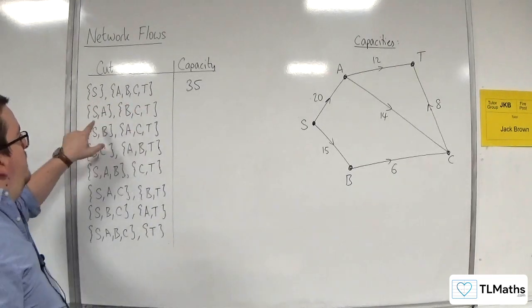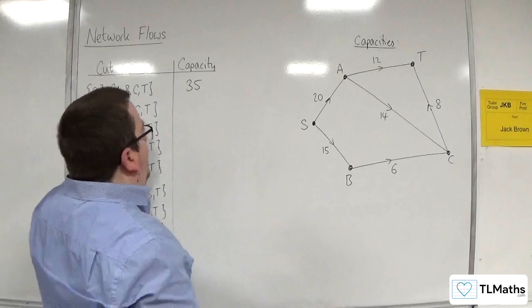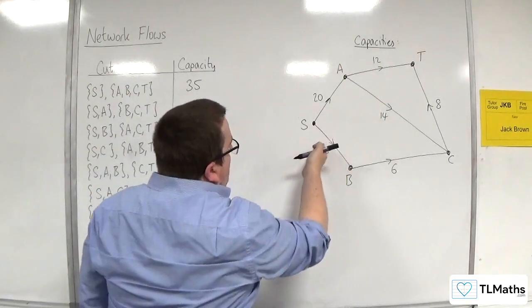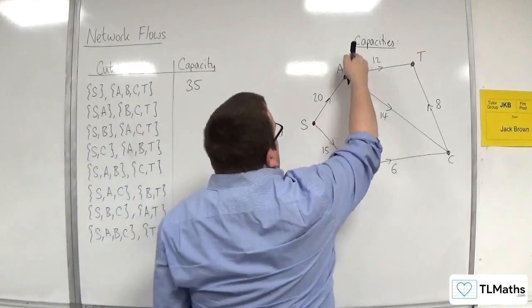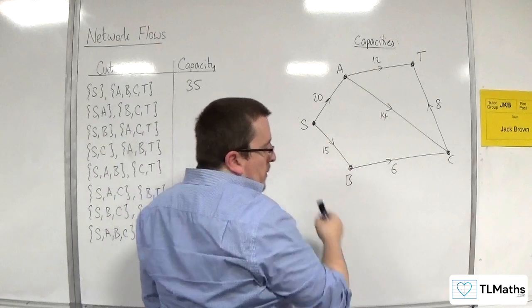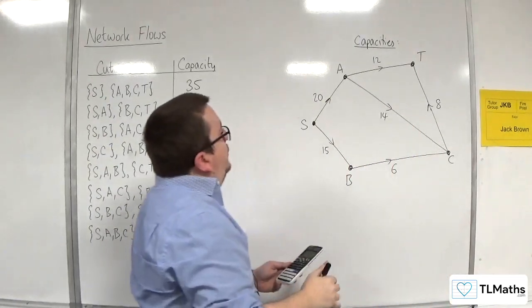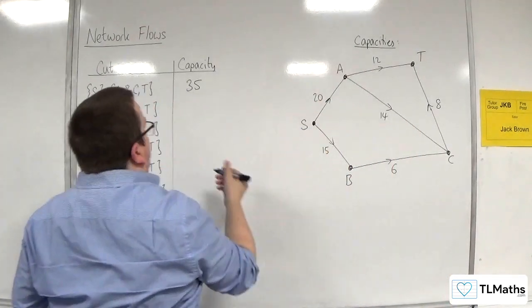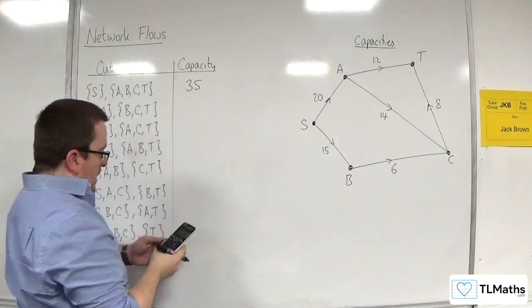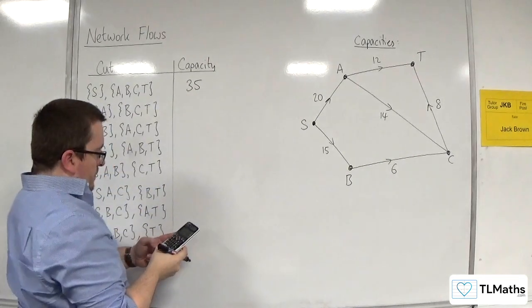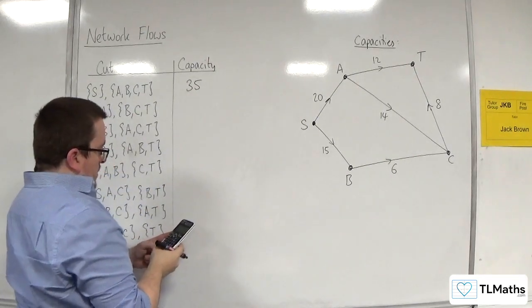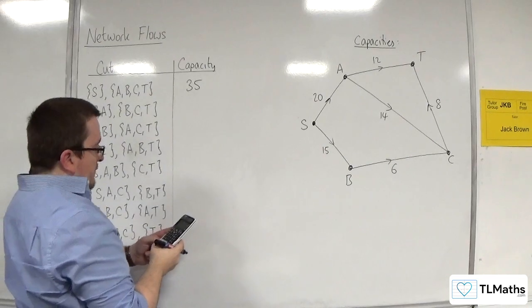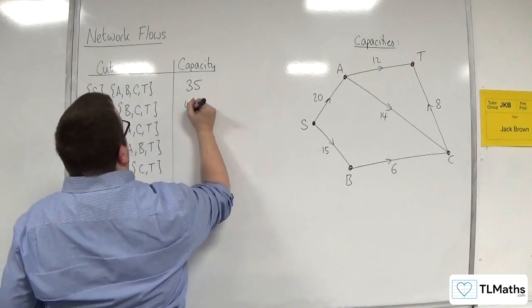Next: S, A, and B, C, T. It's going to cut through here. So you've got 12 plus 14 plus 15. That gives us 41.